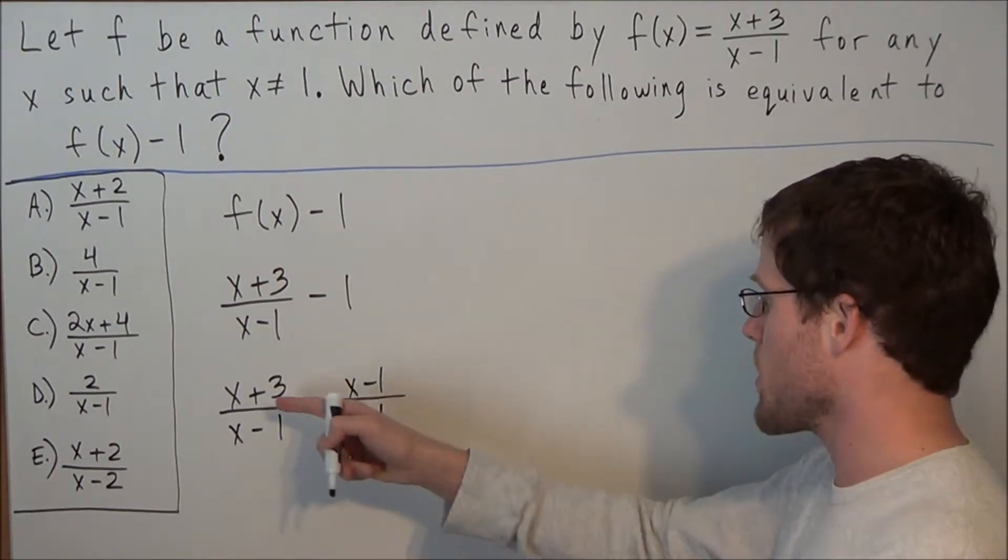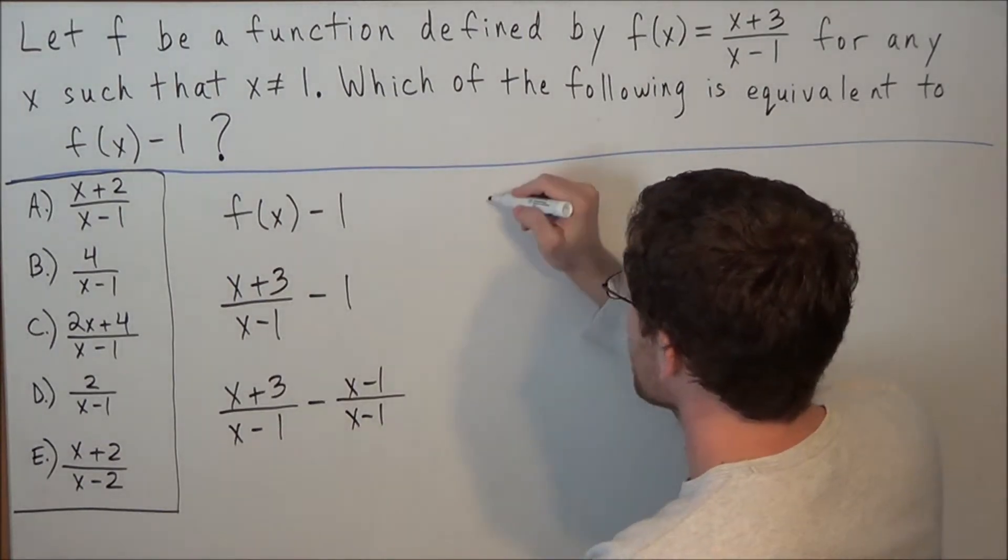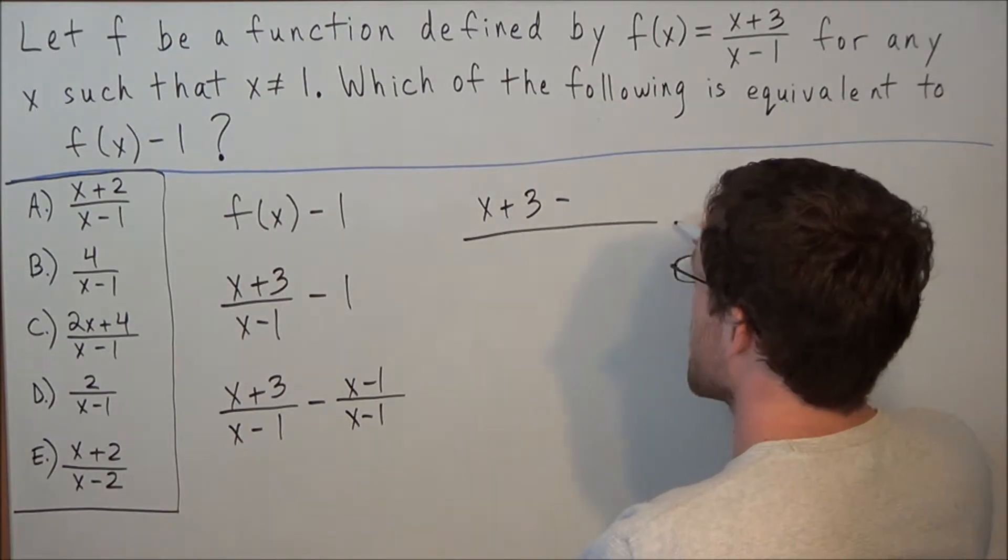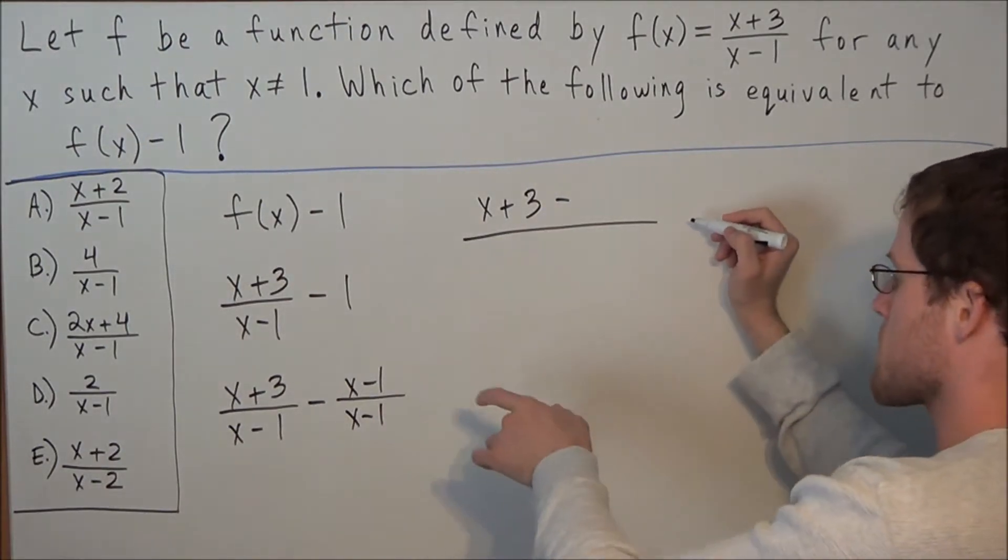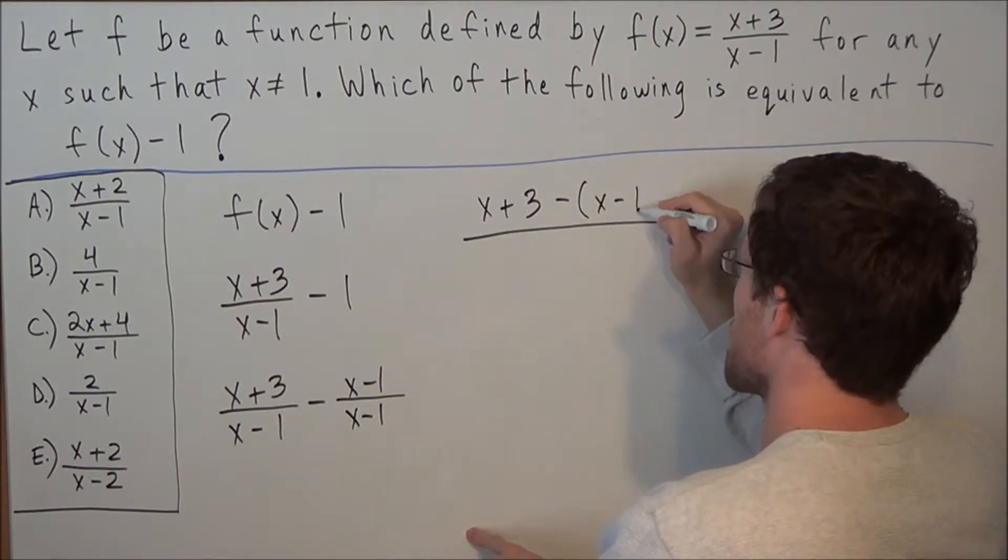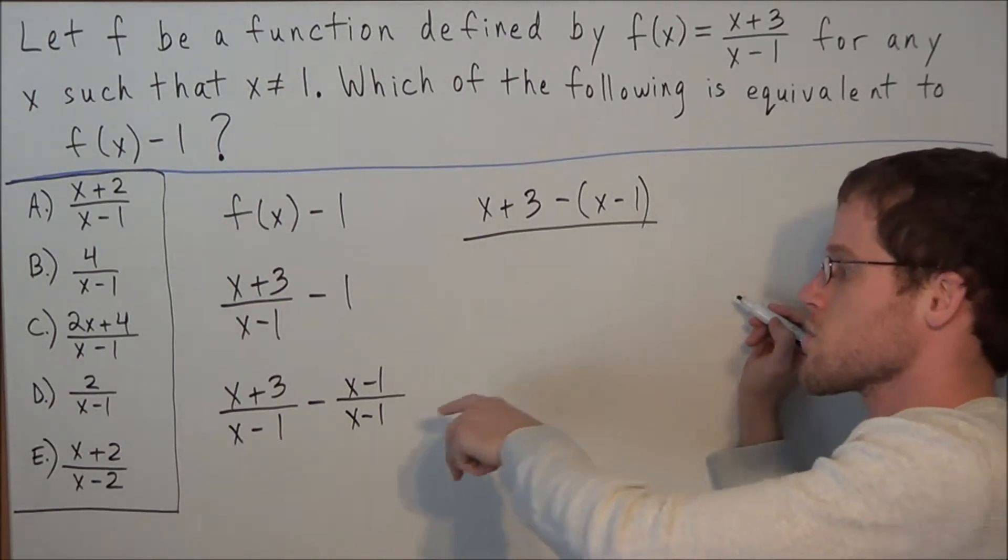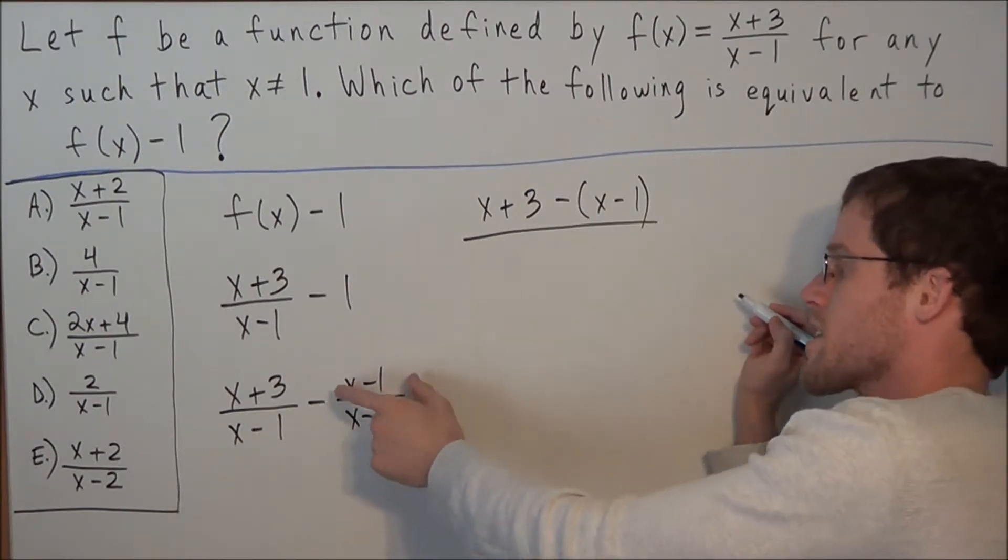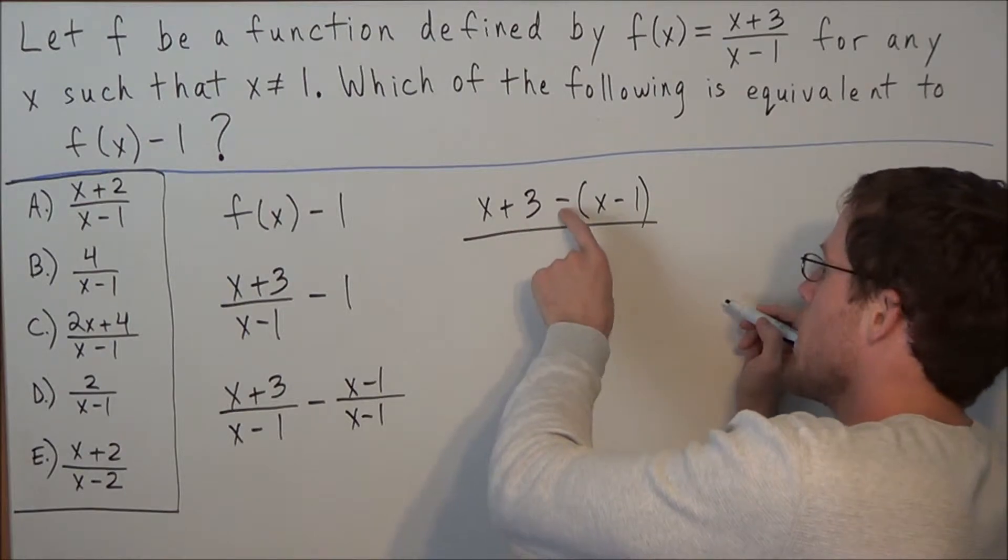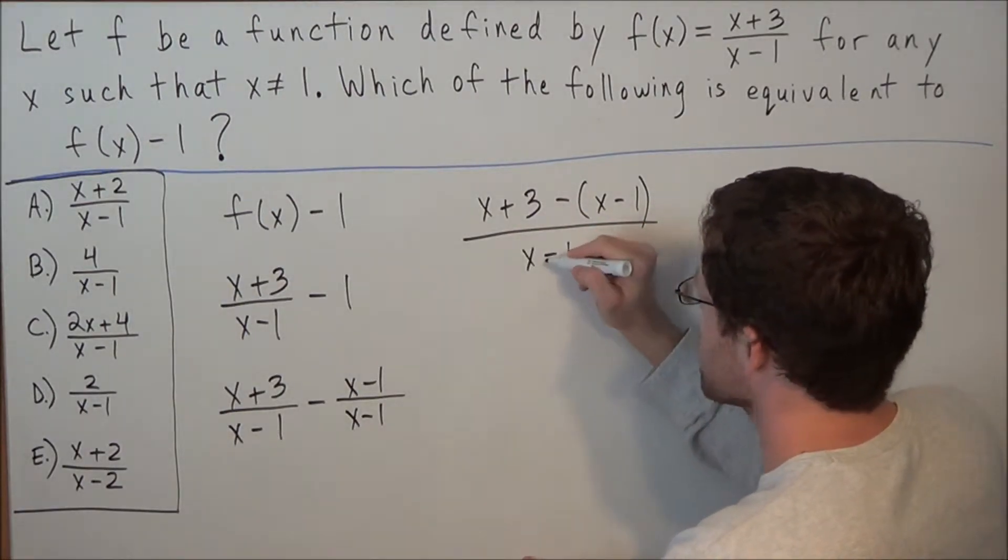So now we're subtracting two fractions with the same denominator. We have x plus 3 minus, and I'll put parentheses because at this step, most students will make a mistake with the sign change and won't distribute the negative. But if we put parentheses, this will take care of subtracting the entire expression x minus 1. So we have x plus 3 minus parentheses x minus 1 over x minus 1.